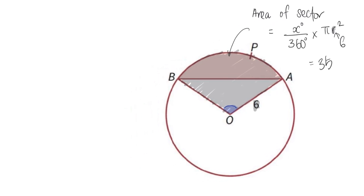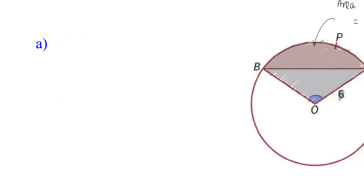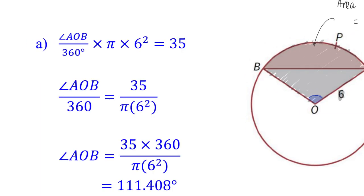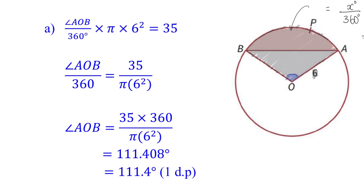Okay, so I am going to now zoom into my working. So as you can see here, with the radius as 6 and the area of the sector as 35, then I can apply my algebraic skills, dividing pi 6 squared on both sides of this equation, followed by multiplying the 360, that will give me the angle AOB, 111.4 degrees to one decimal place.